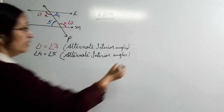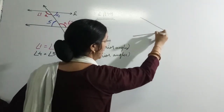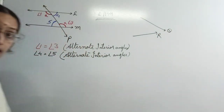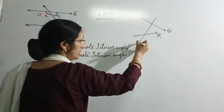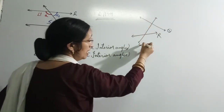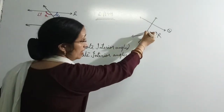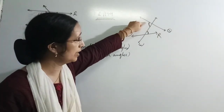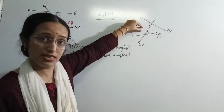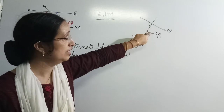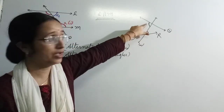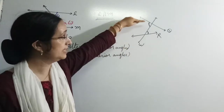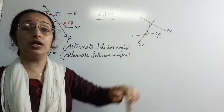हम यहाँ पर एक example लेकर समझ सकते हैं. अगर यह एक line ऐसी है और एक line ऐसी है — इस case में lines parallel नहीं हैं. इसको Q और इसको R लेते हैं, और यहाँ से transversal W निकालते हैं. यह वाला angle और यह वाला — alternate interior तो हैं, क्योंकि दोनों lines के बीच में हैं, एक right में एक left में. But they will not be equal — one is small and one is big. So if lines are not parallel, then these alternate interior angles will not be equal.